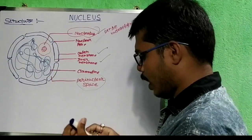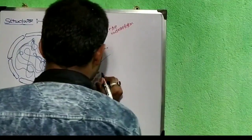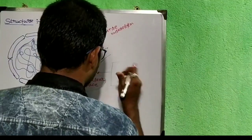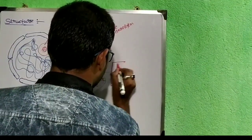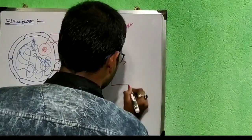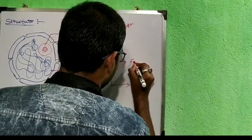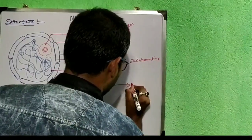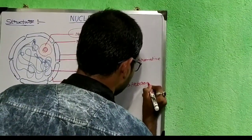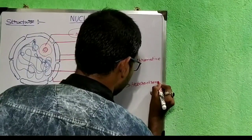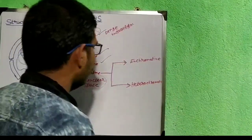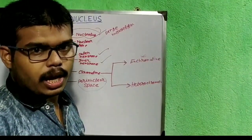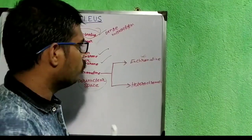These chromatin are two in type. One type of chromatin is known as euchromatin and another type is known as heterochromatin. Euchromatin is the chromatin which is not densely stained, and heterochromatin is the chromatin which is densely stained.